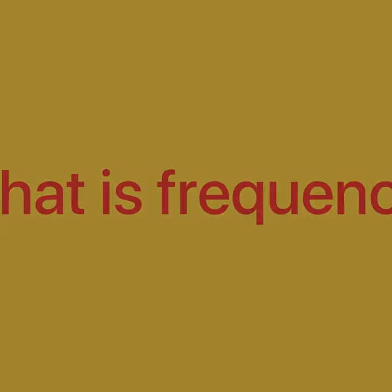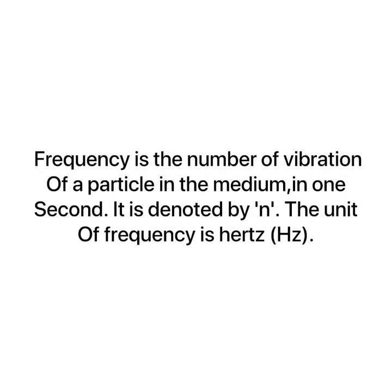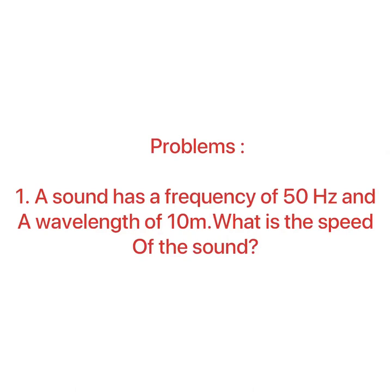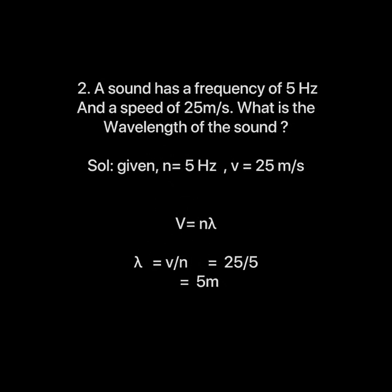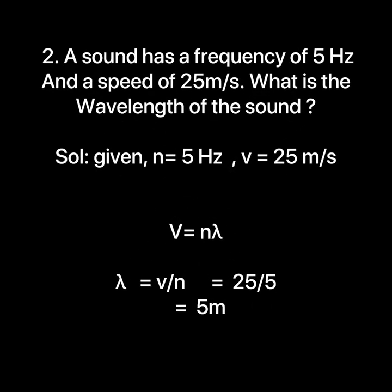Frequency is the number of vibrations of a particle in the medium in one second. It is denoted by n and its unit is hertz. Example problem: a sound has a frequency of 50 Hz and a wavelength of 10 meters. What is the speed of sound? Given n = 50 Hz and λ = 10 m, using v = n × λ, speed = 50 × 10 = 500 meters per second.